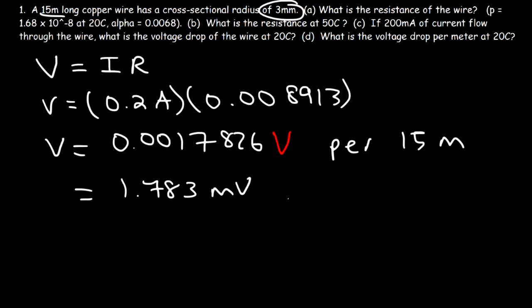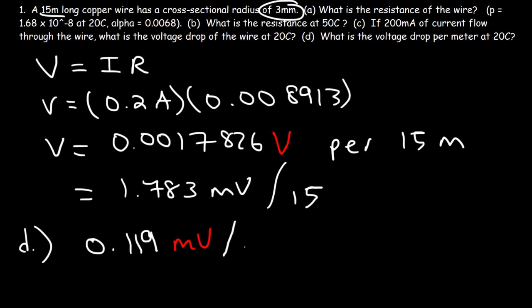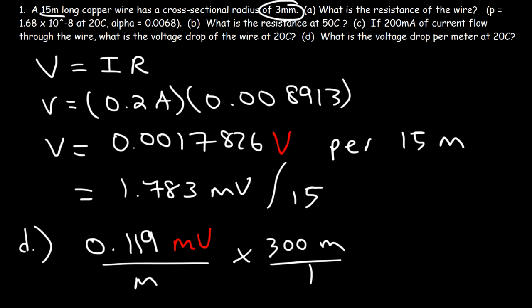Part D: What is the voltage drop per meter? Dividing 1.783 millivolts by 15 meters gives 0.119 millivolts per meter. With this information, we can calculate the voltage drop at any length. For example, if the copper wire were 300 meters long, multiply 0.119 millivolts per meter by 300 meters to get a voltage drop of 35.7 millivolts.